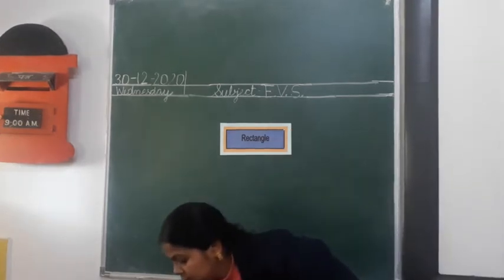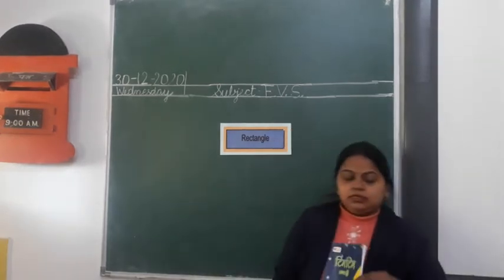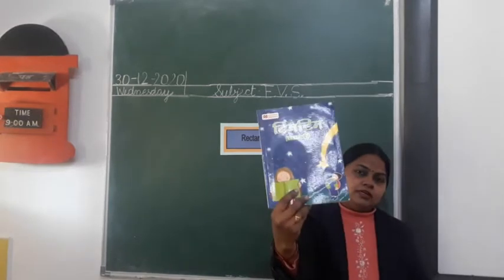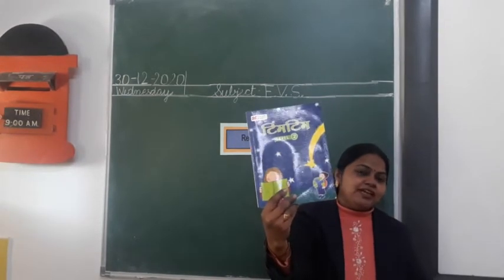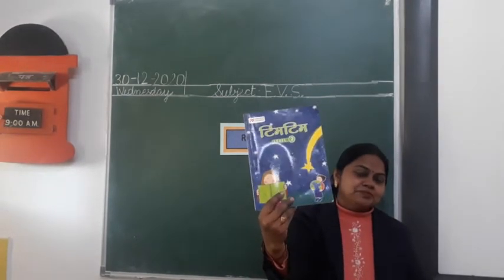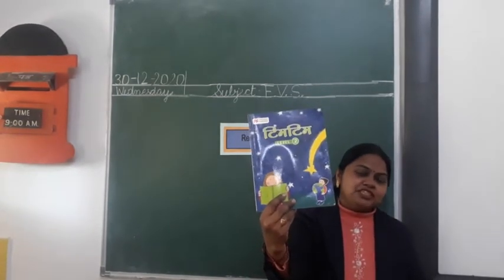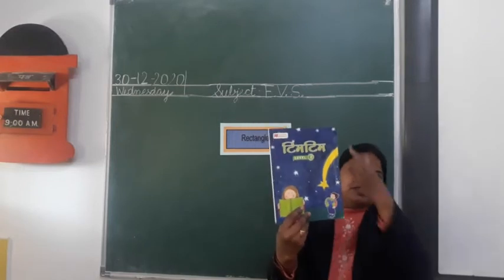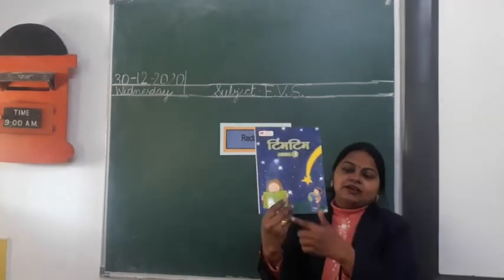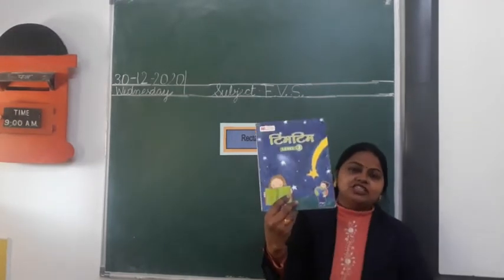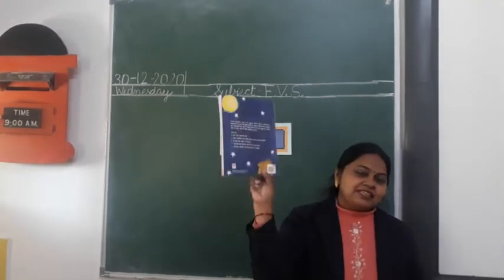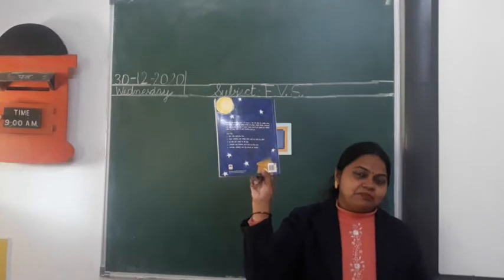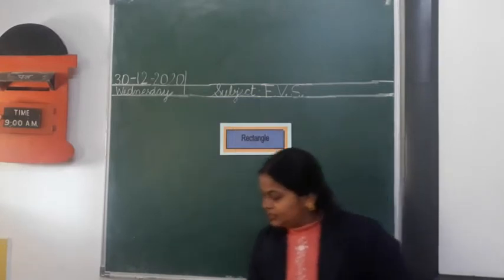Now see this book. Can you see the shape of this book? Rectangle shape. Which shape is this? Rectangle shape. Okay?